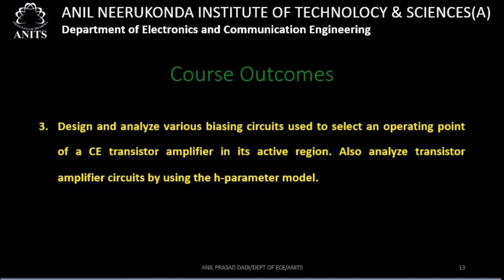Once the transistor is fixed in the active region, it is ready to act as an amplifier. Then you need to analyze the amplifier circuits using the H parameter model. The BJT device can be replaced with its mathematical model, which is called the H parameter model. So two things are involved: designing and analyzing biasing circuits to fix the operating point, and analyzing the transistor amplifier circuit using the H parameter model.